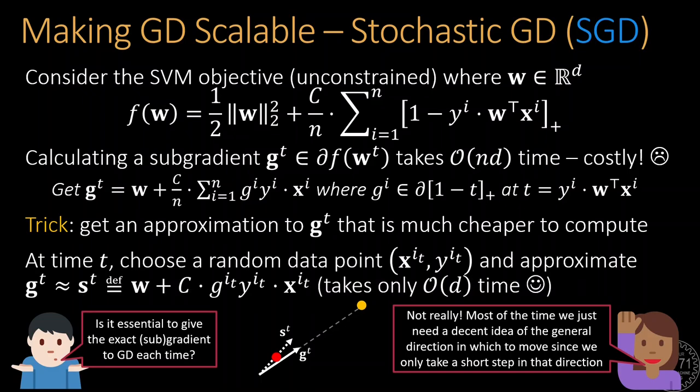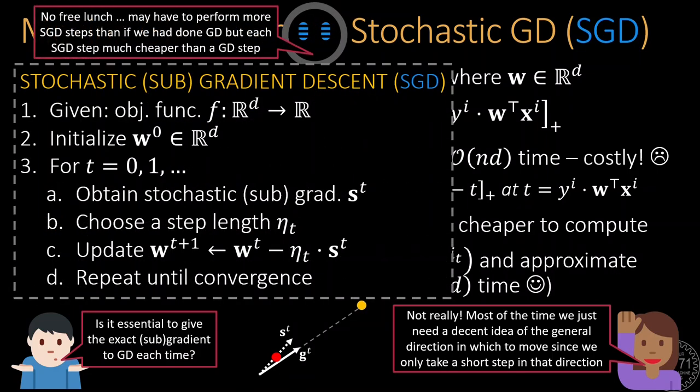One such approximation is the so-called stochastic gradient which computes a descent direction using a single randomly chosen data point. A random point is chosen to give all points a fair chance to participate in this process. Computing the stochastic gradient takes only order D time making it far faster than GD. Take care that we may need to execute more iterations of SGD than we had to do for GD. However, this is still preferable since each SGD iteration is so much cheaper than a GD iteration.